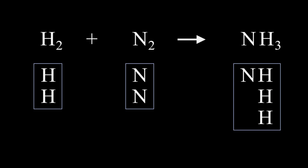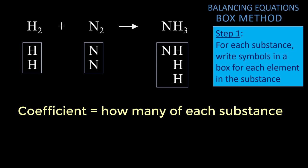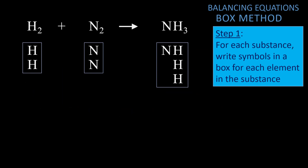Remember that any symbol without a subscript actually has the subscript 1, and so here we put 1 N for 1 nitrogen. The coefficient is the number that tells us how many of each substance there are, and the number of boxes tells us what the coefficient is for each substance.